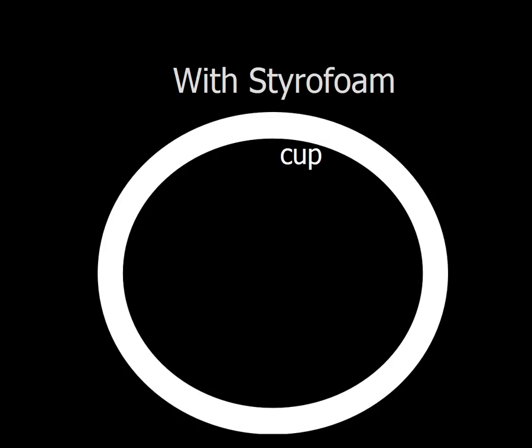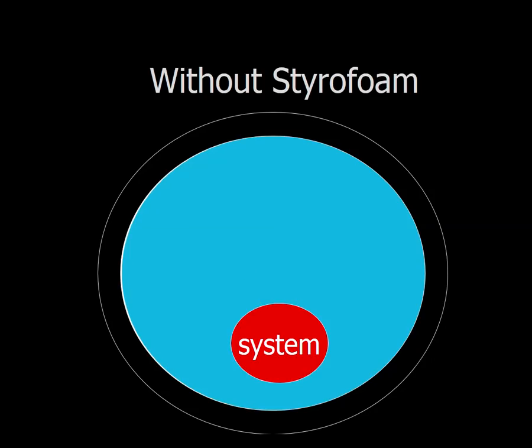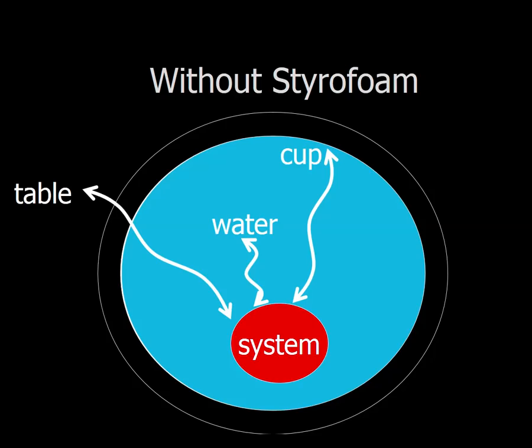So if we're looking inside the cup, we have water and we have our system. When styrofoam is present, the heat can only flow between the system and the water and the system and the cup. Without styrofoam, that's not the case. It's not as simple. The heat flows between the system and the water, the system and the cup, but it also leaks out. And that's very hard to keep track of if you're trying to calculate heat. It leaks to the outside world.